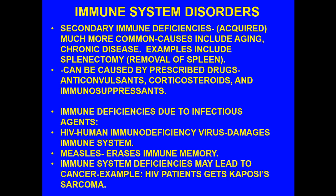With secondary immune deficiencies, these are usually acquired and much more common. The causes include aging or chronic disease. Examples include individuals who have had a splenectomy — the removal of the spleen. This can also be caused by drugs, particularly anticonvulsants, corticosteroids, or immunosuppressants. There are also situations where immune deficiencies are caused by infectious agents — the most well-known being HIV, which directly damages cells that are part of the immune system.